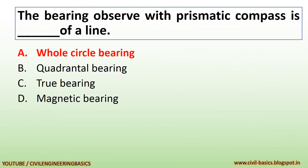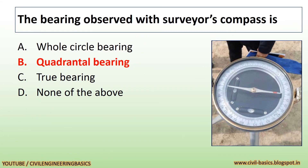The bearing observed with a prismatic compass is a whole circle bearing of a line. The bearing observed with a surveyor's compass is a quadrantal bearing.